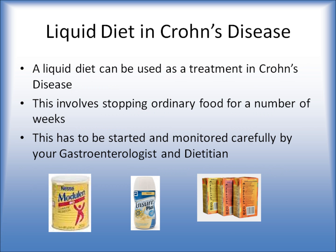These are the different types of liquid diets you could go on during a flare-up of Crohn's disease. It involves stopping all foods, perhaps having a little tea or coffee, but generally no other fluids or foods can be consumed. The types include Modulin, Enchoplasm, and Elemental O28H — there are multiple options. You follow this for a number of weeks, depending on what your consultant thinks is appropriate, and then you start reintroducing foods at the end of that period in a structured way.